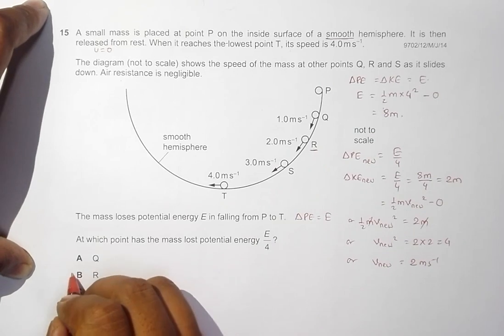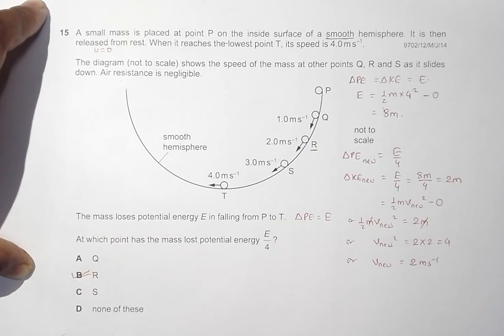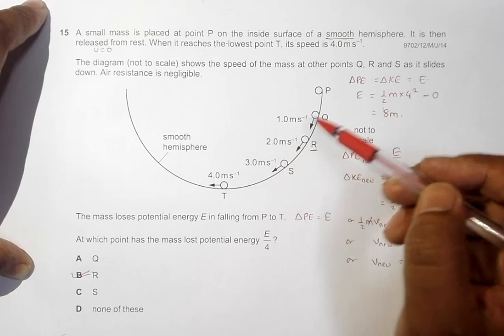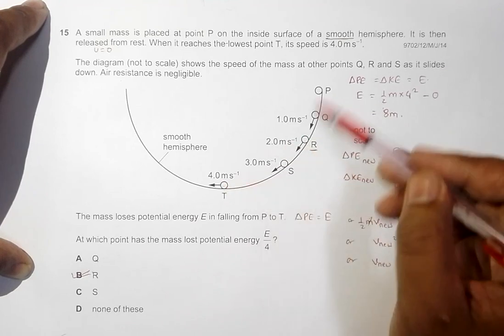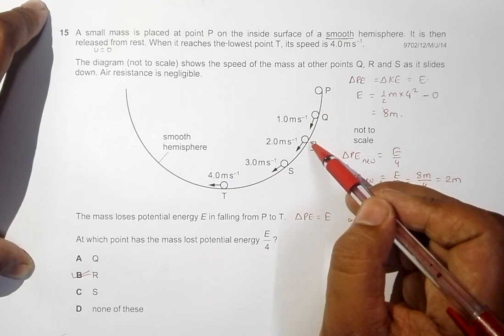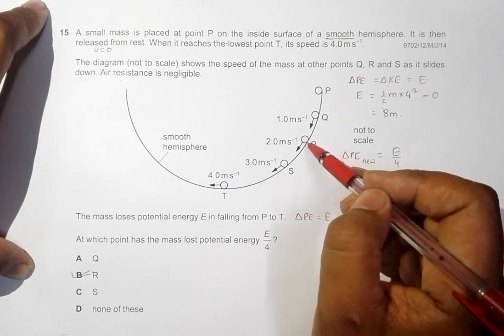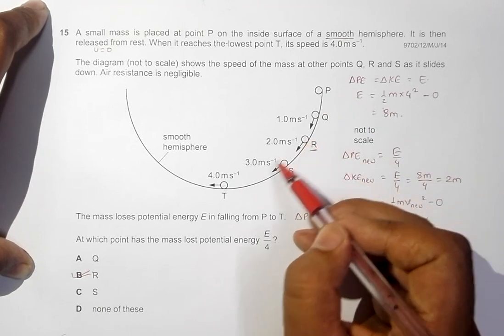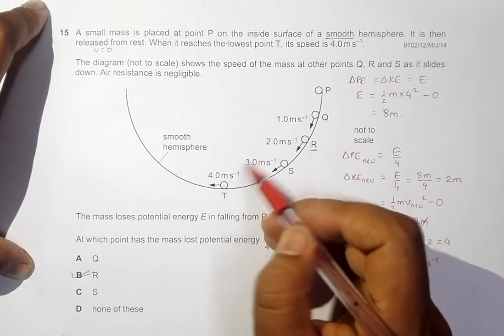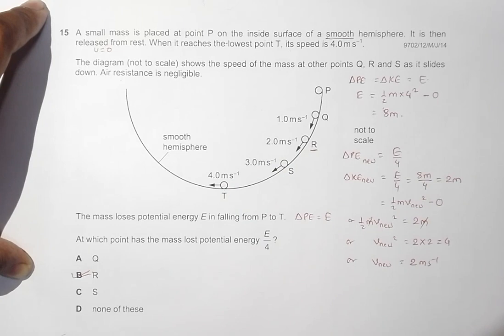One thing to note is that when the velocity is half of the maximum, it has lost only 1/4 energy. So it loses 1/4 energy here and the remaining 3/4 energy from here to here. That's how loss of PE and gain of kinetic energy takes place.